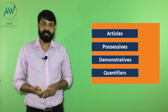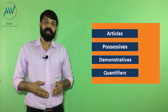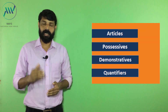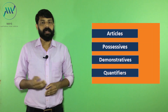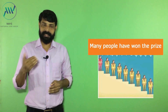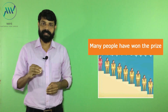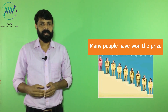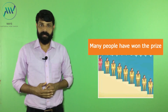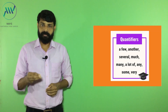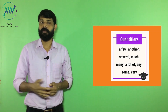Now we can talk about the fourth one: quantifiers. As the name suggests, quantifiers are used to express the quantity. It can answer the question: how much or how many. See some examples. 'Many people have won the prize.' In this example, the word 'many' is a quantifier — here it is used to express the quantity. We have a wide range of quantifiers. All these are examples for quantifiers, and we can use all of them to express quantity.